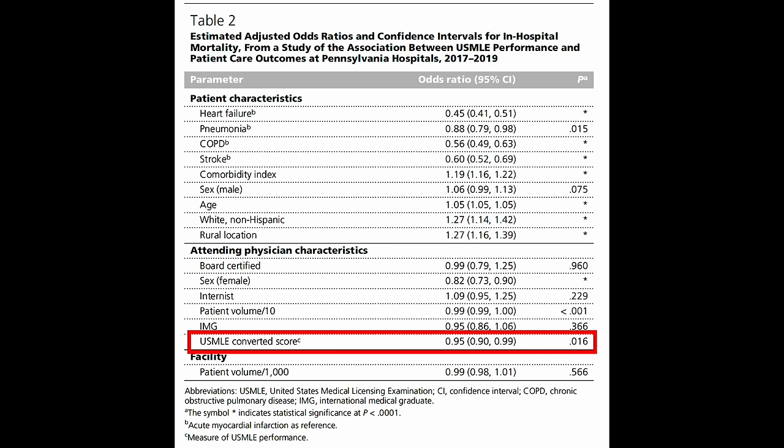And once they'd done all that, here's what they found. When you look at mortality, the higher the doctor's USMLE performance was, the more likely their patients were to make it out of the hospital alive. The adjusted odds ratio for mortality was 0.95. So for every one unit increase in USMLE performance, there was a 5% decrease in the odds of in-hospital mortality. And that's even after adjusting for all those other variables.